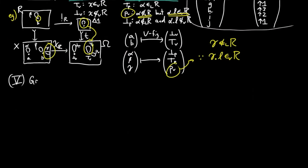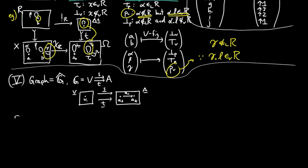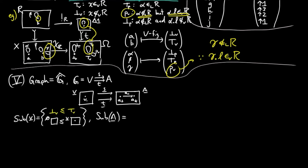In the category of graphs, which is the category of pre-sheaves on a two-object category with two non-identity morphisms s and t, the Yoneda embedding gives us two morphisms underline s and underline t, from the representable on v with one vertex and no arcs, to the representable on a with two vertices and one arc between them. Underline s picks out the source of a1, and underline t picks out the target. The sub-containers of underline v are the empty graph and the identity subgraph. The subgraphs of underline a consist of the empty graph, the two graphs picking out the source vertex and target vertex respectively, the subgraph with both vertices and no arc, and the identity morphism.